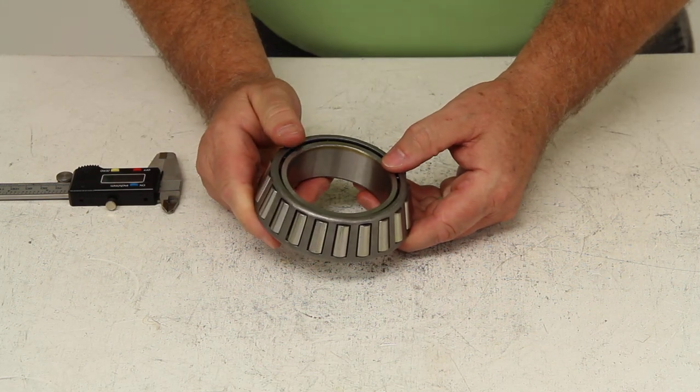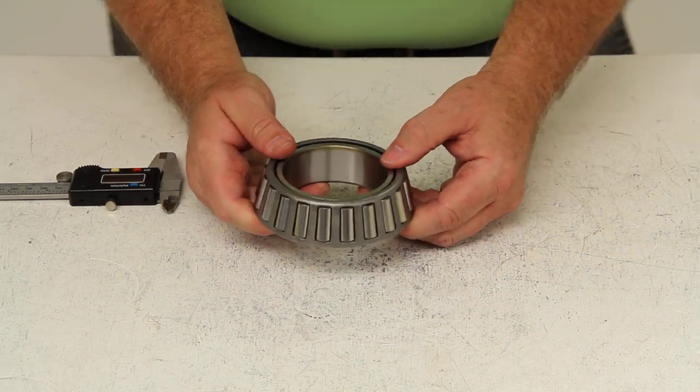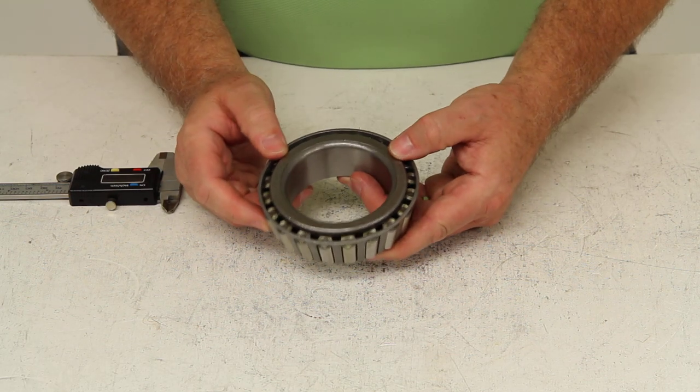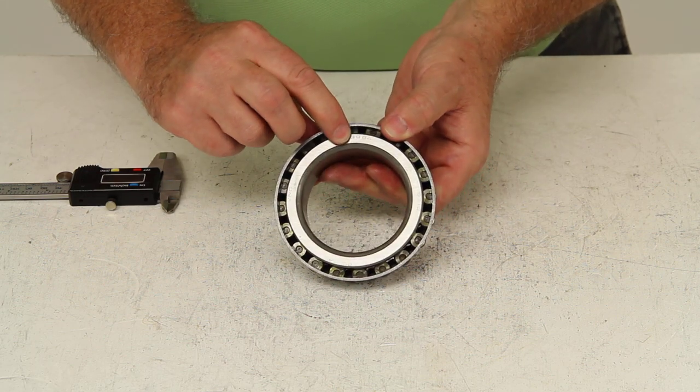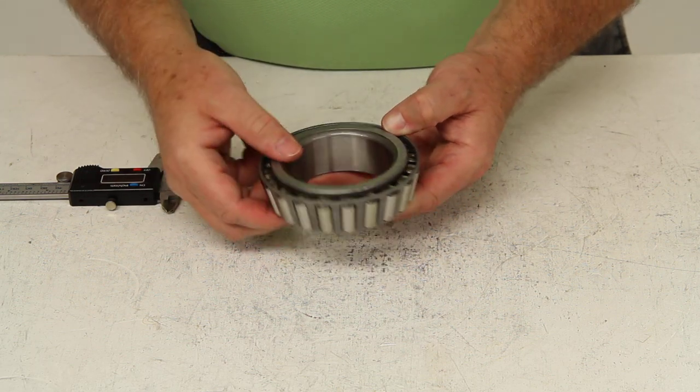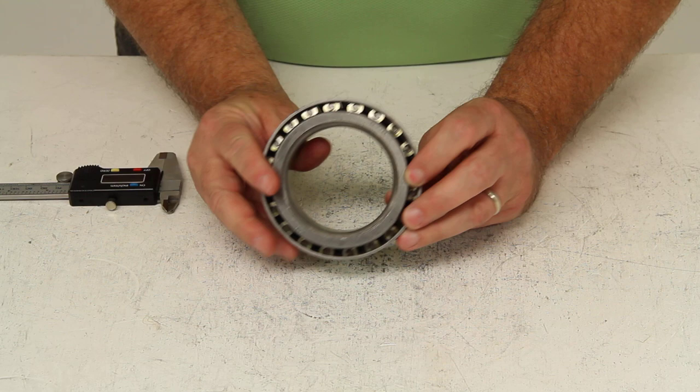All bearings have industry standard numbers regardless of the brand. On this wheel bearing, you can actually see the part number stamped right on there: 3984.